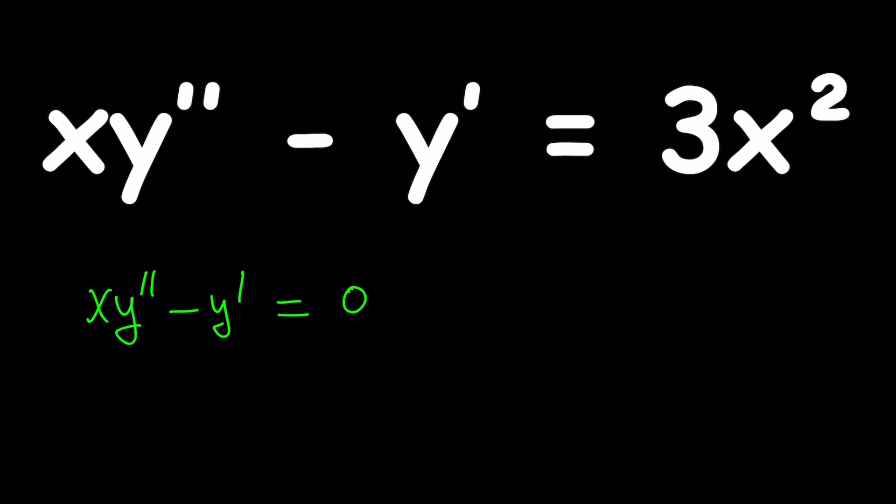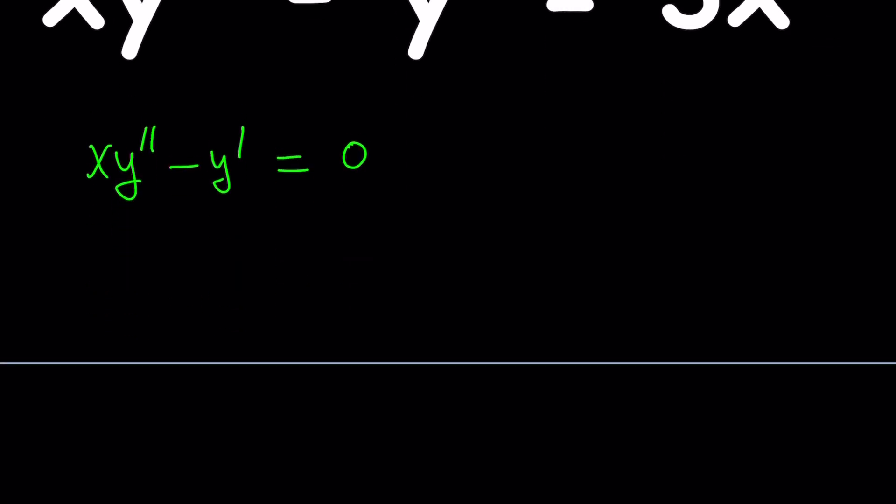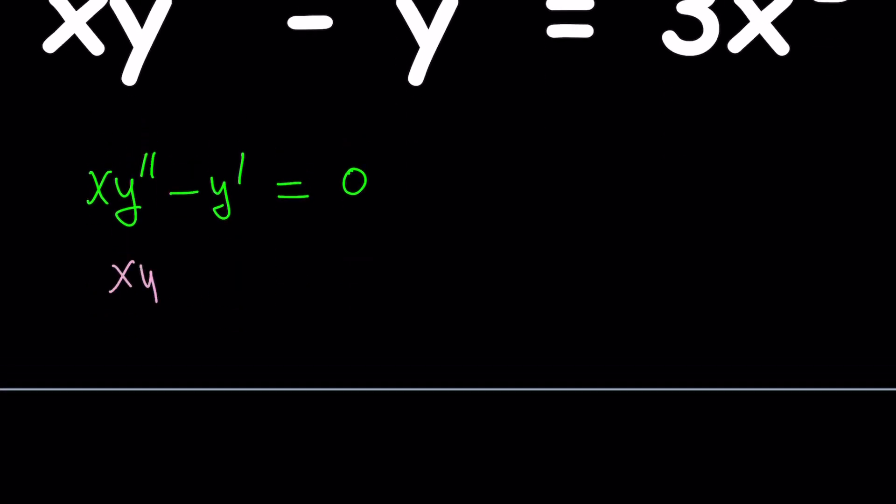There's a couple ways you can go about solving this equation. One way to approach it is try to isolate first y double prime. So, let's go ahead and add y prime to both sides. And then divide both sides by y prime. That's going to give me x y double prime divided by y prime is equal to 1.